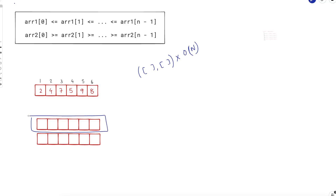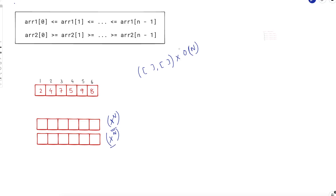For the first array, the value at each position can be anything between 0 and the corresponding nums value. Let's assume all nums values are x. For each element you have x choices, and there are n boxes, so there are x^n different first arrays and similarly x^n different second arrays. For each pair you take O(n) time to check, so overall complexity is x^(2n) * n, which will not pass.